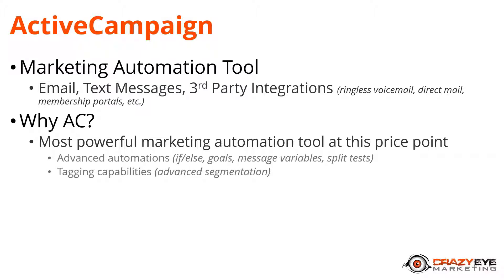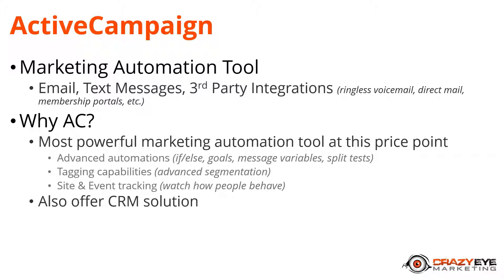There's also tagging capabilities for advanced segmentation. There's site and event tracking so you can watch how people behave on your website — you can see what pages they're looking at and trigger emails based on what they're viewing. They also offer a CRM solution, or customer relationship management solution, which is more for businesses that are hands-on with people — calling them, emailing them, personally talking to them, and bringing them through a sales process.